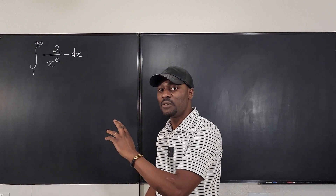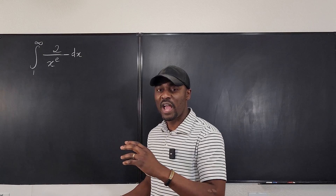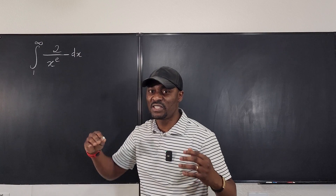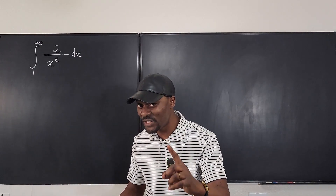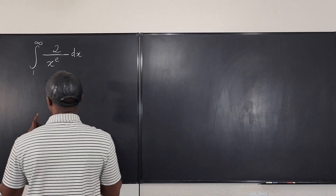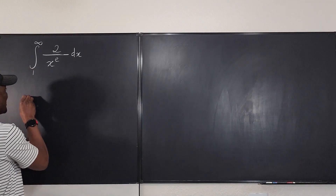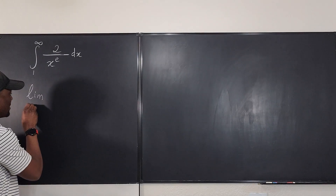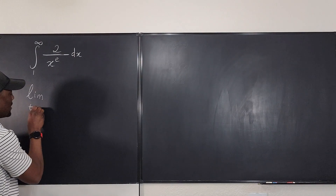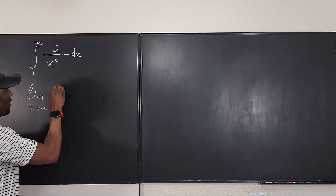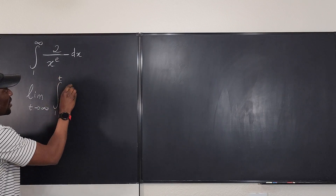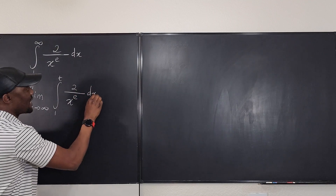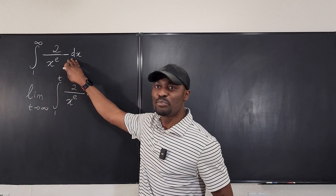In order to deal with improper integrals, we have to resort to limits. We have to rewrite this expression so that what we're saying makes sense. We're going to say that this actually is the limit as — pick a letter, I'm going to pick the letter t — t goes to infinity of this integral from 1 to t of 2 over x to the e, dx.